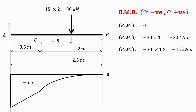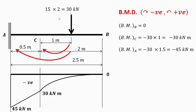Bending moment at the free end is always zero. To find the bending moment at C, consider all forces on the right hand side of C. There is only one force, 30 kilonewton, and it produces a clockwise moment of 30 into 1, which is 30 kilonewton meter. Since clockwise moments are considered negative, the bending moment at C is minus 30 kilonewton meter.